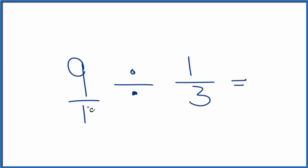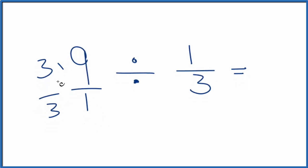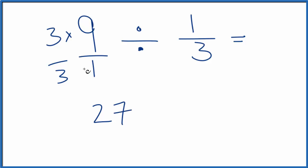So we want to get the same denominator. I could multiply 9 by 3 over 3. That way, 3 times 9, that's 27. 3 times 1, that's 3. So we have 27 over 3.